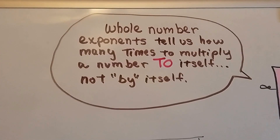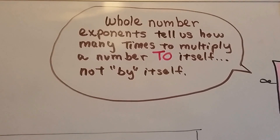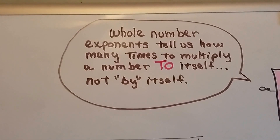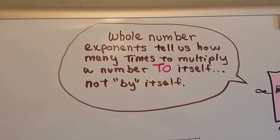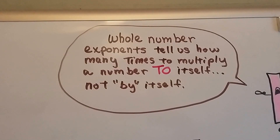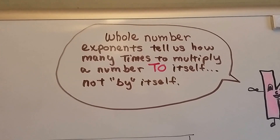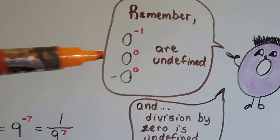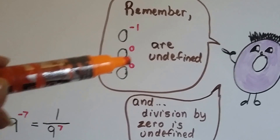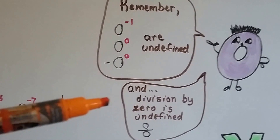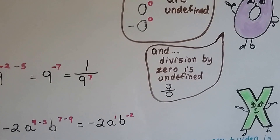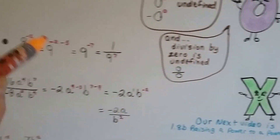Whole number exponents tell us how many times to multiply a number to itself — not by itself. 'By itself' means it's alone, so make sure you write 'multiplied to itself.' Also remember that 0 to the negative 1, 0 to the 0, and similar expressions are undefined, because division by 0 is undefined — we can't have 0 over 0.